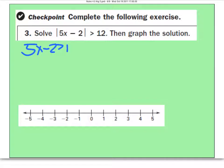I'm just going to break this up already. It's ready to go. 5x minus 2 is greater than 12. And then 5x minus 2, flip the sign, change it to negative 12.